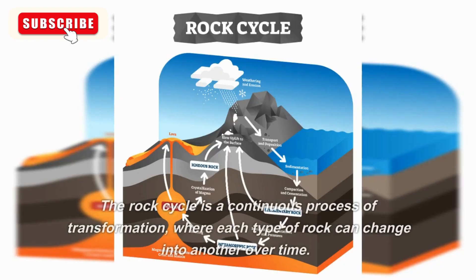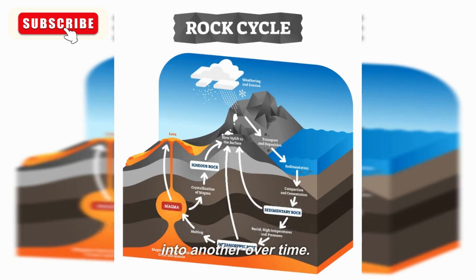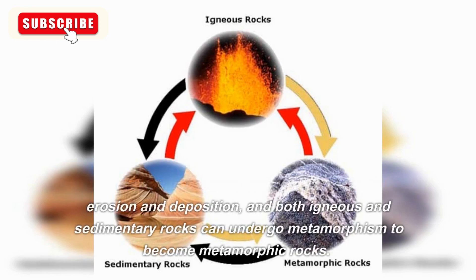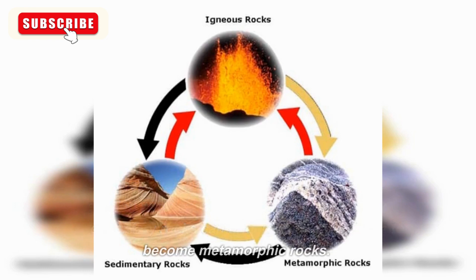The rock cycle is a continuous process of transformation, where each type of rock can change into another over time. Igneous rocks can become sedimentary rocks through erosion and deposition, and both igneous and sedimentary rocks can undergo metamorphism to become metamorphic rocks.